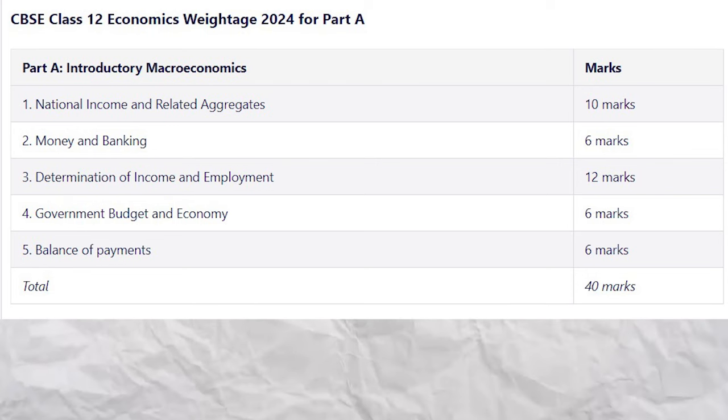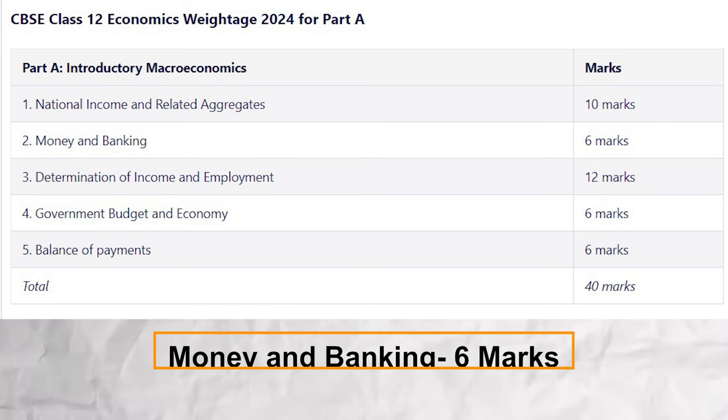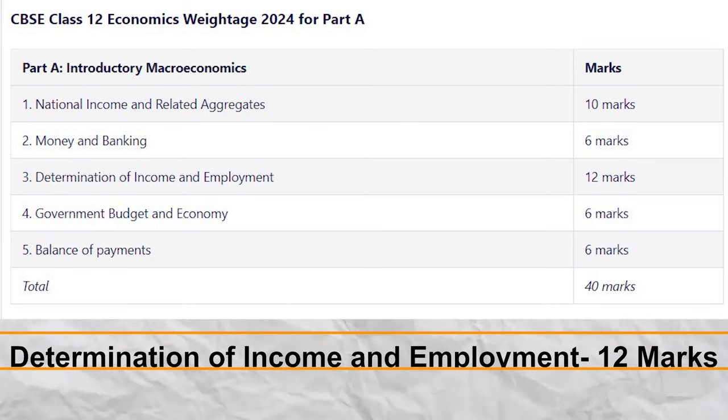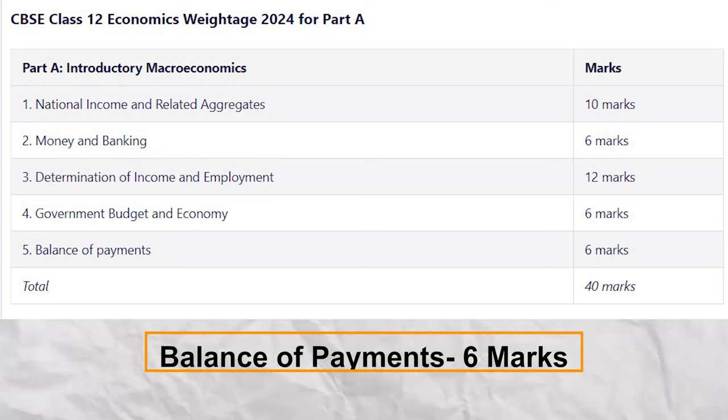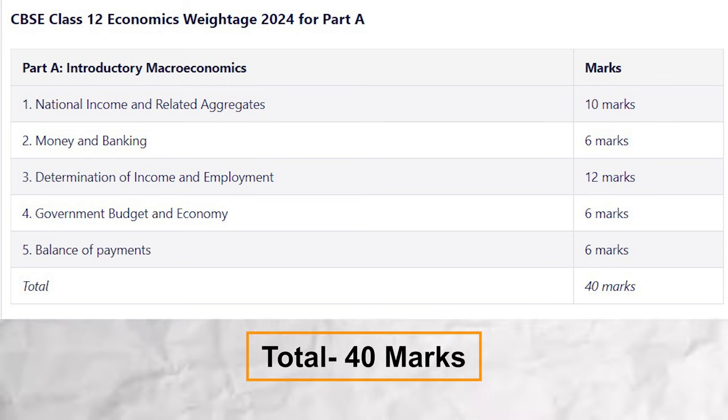It is possible that you can score a little better from past marks even at this moment. The first module is macroeconomy. If you know these chapters' individual weightages, you will be in a better position to understand how much you need to focus on each chapter. National income has 10 marks weightage, money and banking has 6 marks, determination of income and employment has 12 marks, government budget has 6 marks, and balance of payments has 6 marks. Overall, this whole segment is 40 marks.